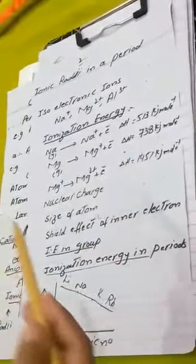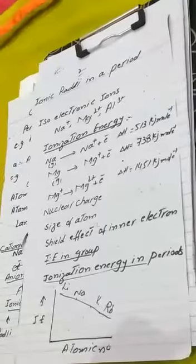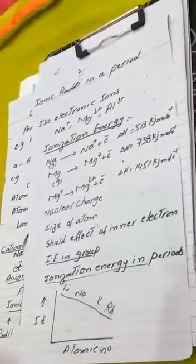For example, when sodium is converted to sodium ions, 513 kJ per mole of energy is required. In the same way, when magnesium is converted to magnesium ions, since two electrons are removed: in the first step 738 kJ per mole is required, and in the second step — known as the second ionization energy — 1451 kJ per mole is required. Ionization energy depends upon nuclear charge, size of the atom, and the shielding effect of inner electrons.